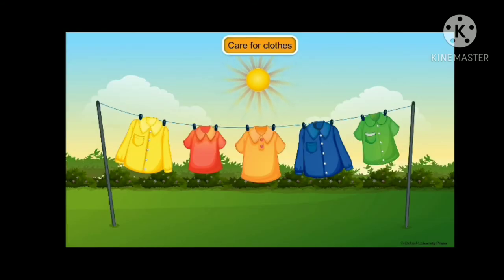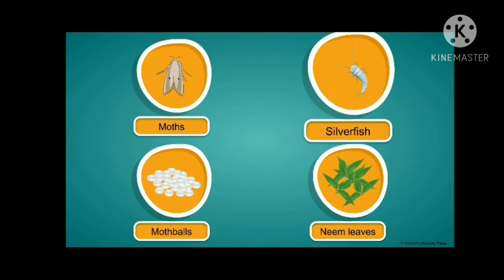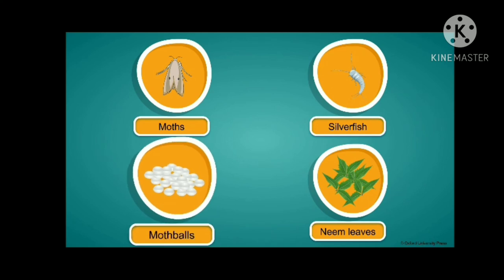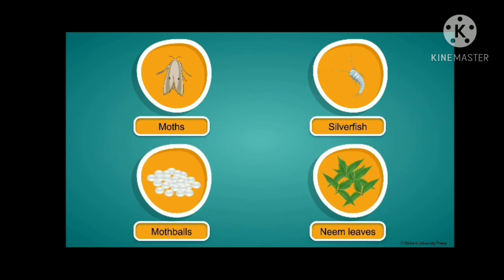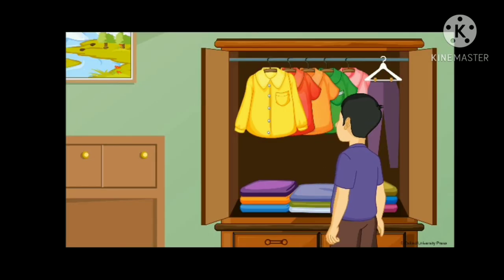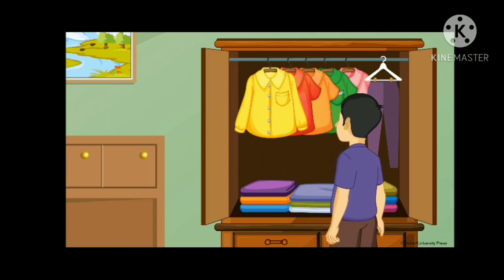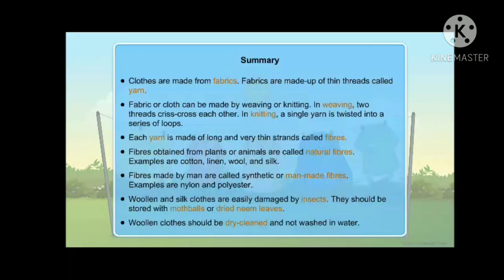Clothes need to be washed well to remove sweat, dirt, and stains. Woolen and silk clothes are easily attacked by small insects such as moth and silverfish, and should be stored with moth balls or dried neem leaves to keep the insects away. Woolen coats and trousers should be dry cleaned to prevent damage. Hope it was nice to learn about clothes. Clothes are precious — take good care of your clothes. Hope you are clear with the concept of clothes we wear. Thank you children, bye-bye.